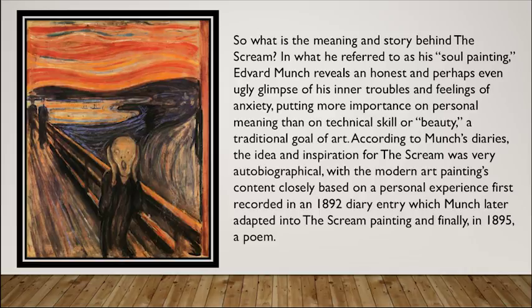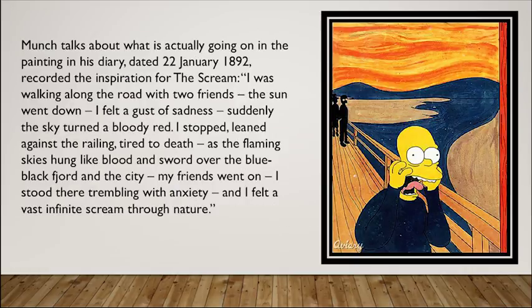To actually understand the settings of the painting, we go into a journal entry dated January 22nd, 1892, where he's pretty much just talking about the whole scene. He talks about how in the painting it's pretty much him just walking along the bridge with his two friends, and as the sun went down, out of nowhere he felt a gush of sadness. Out of nowhere the sky just turned bloody red.